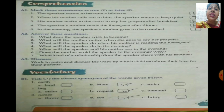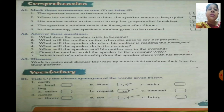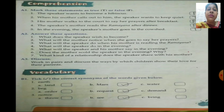Come to page number 17, exercise A1: Mark the sentences as true or false — write T for true and F for false. Number 1: The speaker wants to become a hibiscus. No, he wanted to become a Champa Flower. So number 1 is false.